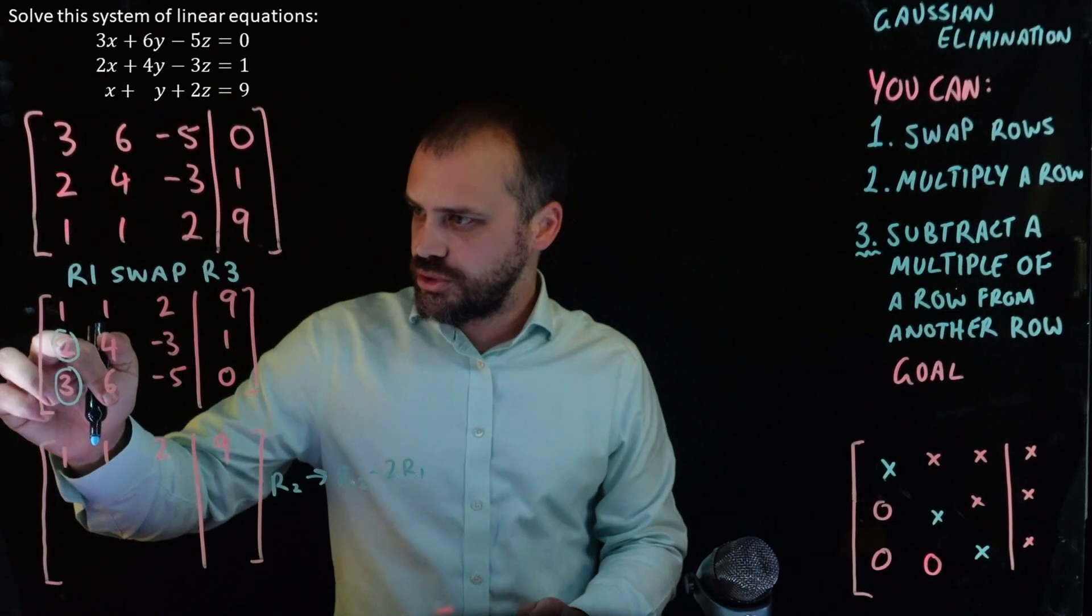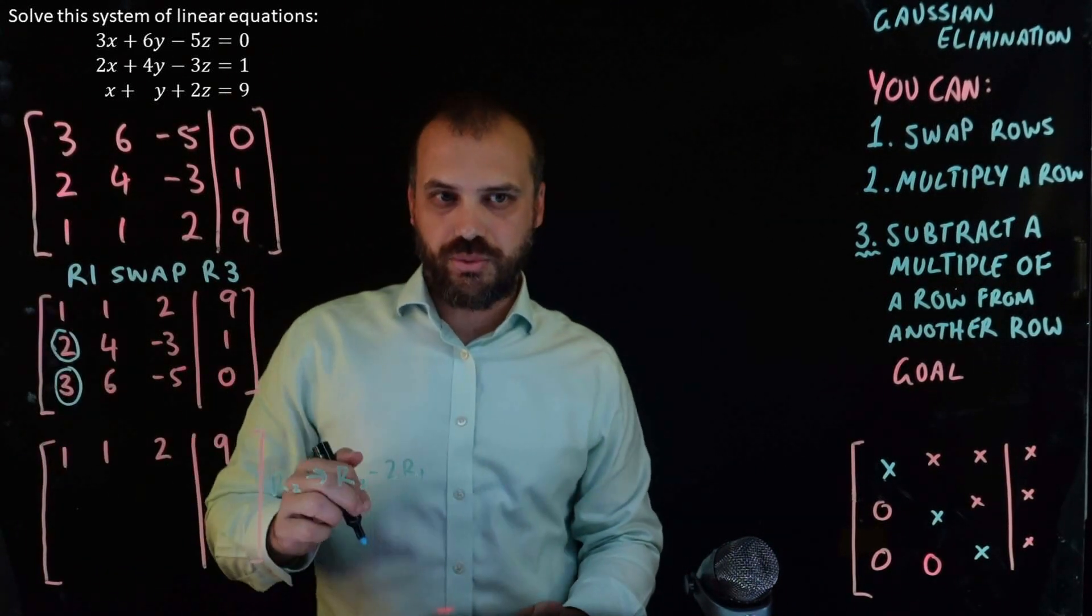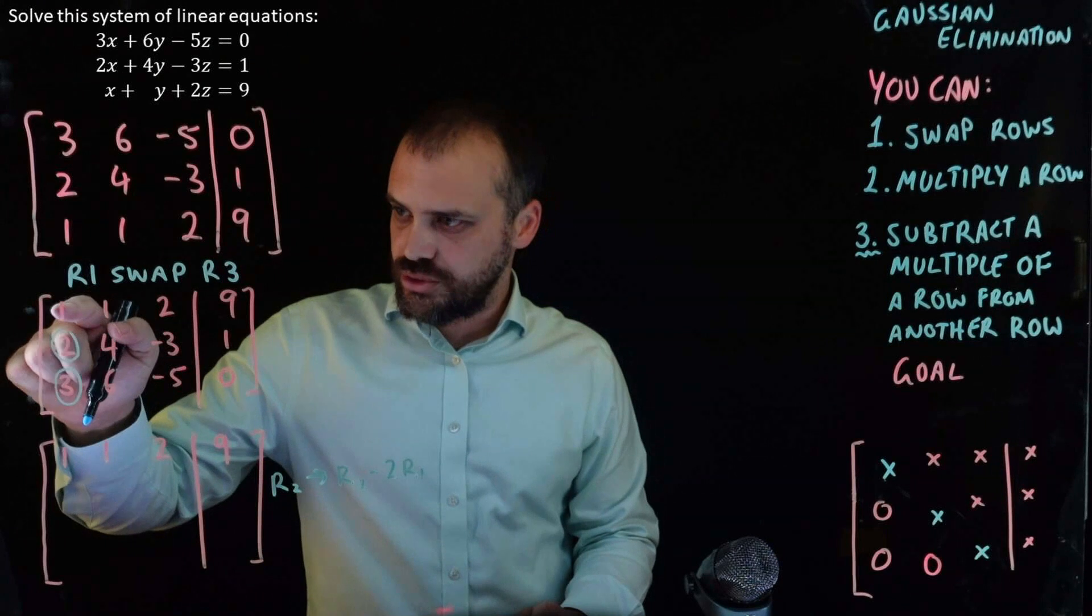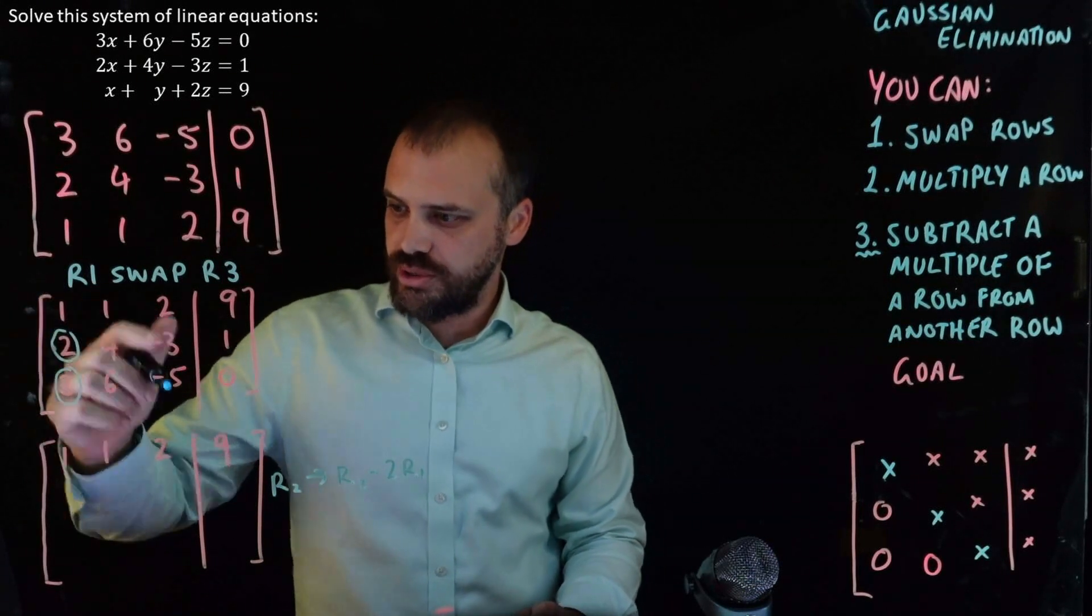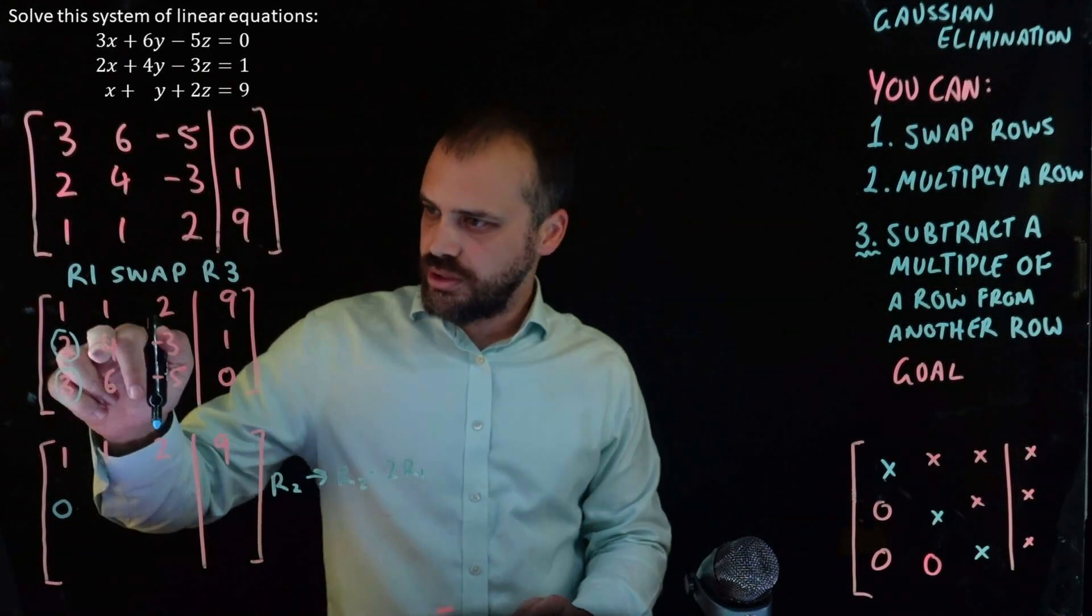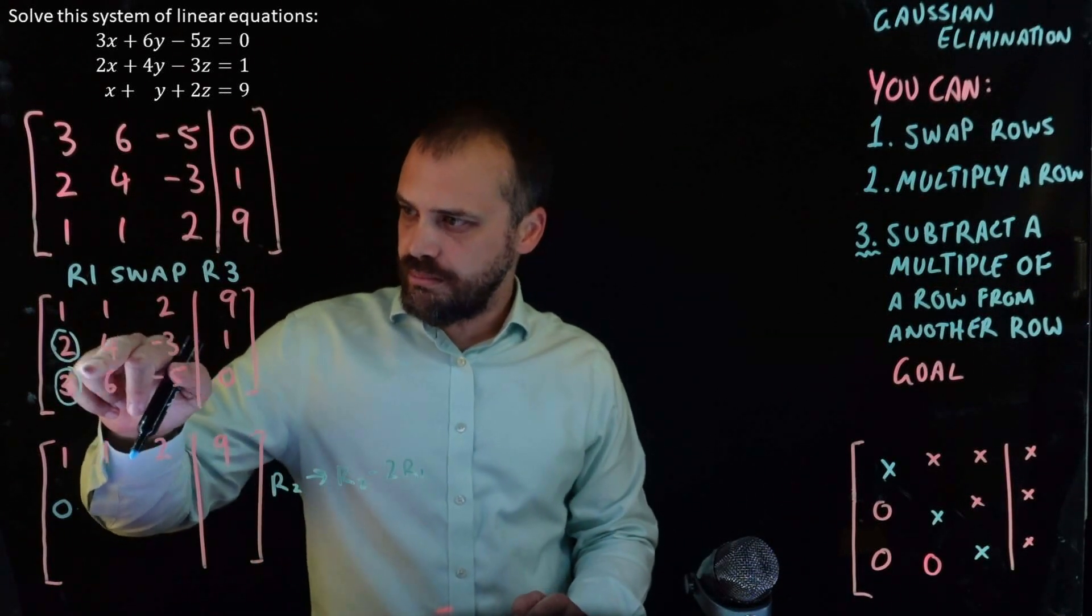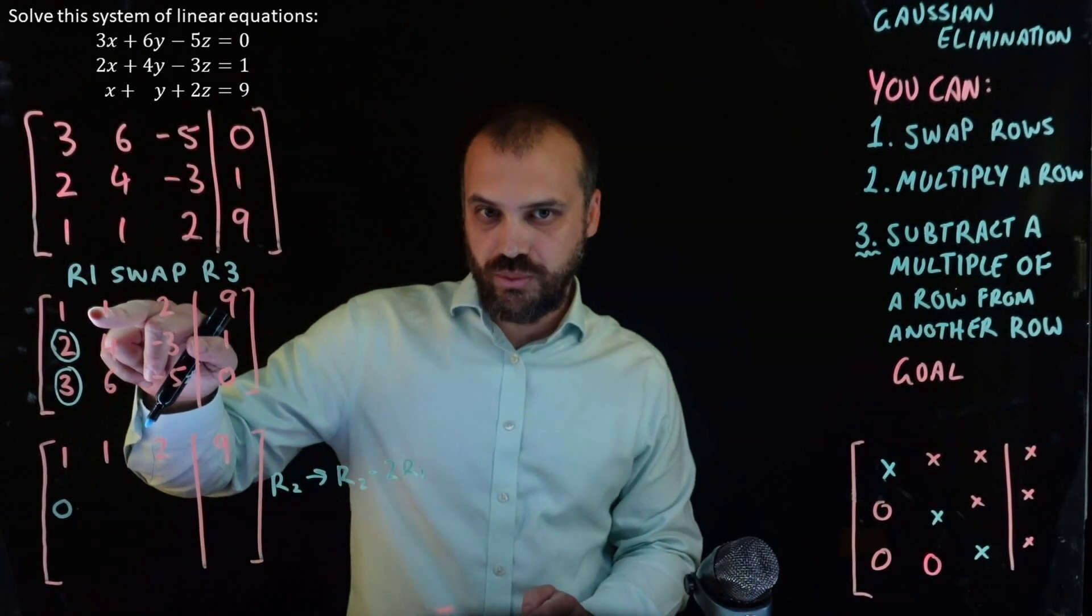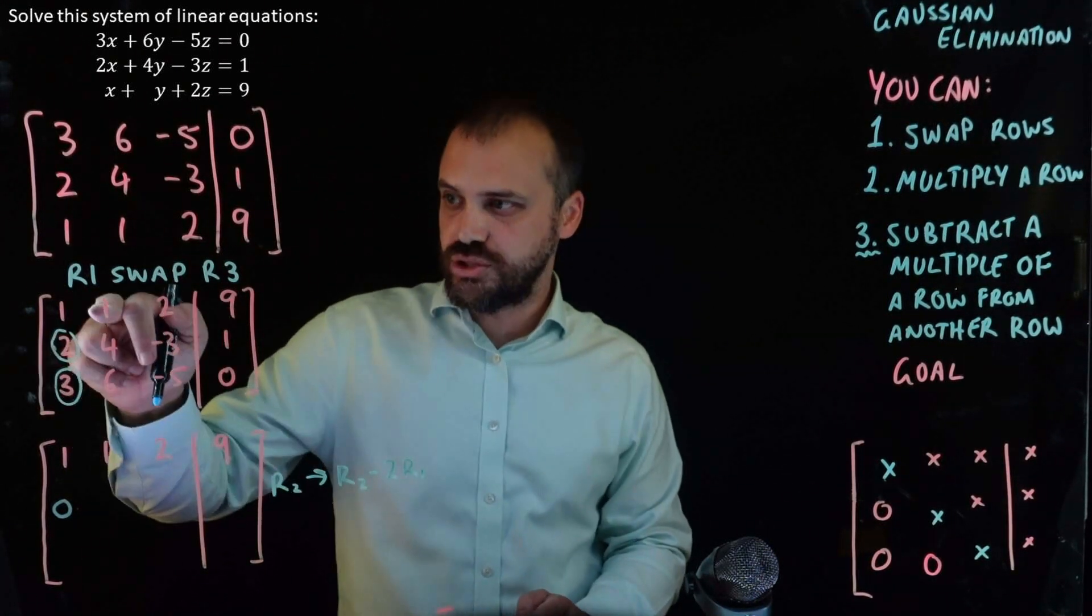Okay, so two minus two times row one. Two times row one is two. Okay, so two minus two is zero. Okay, what's our next one? Four minus two times row one is four minus two, which is two.